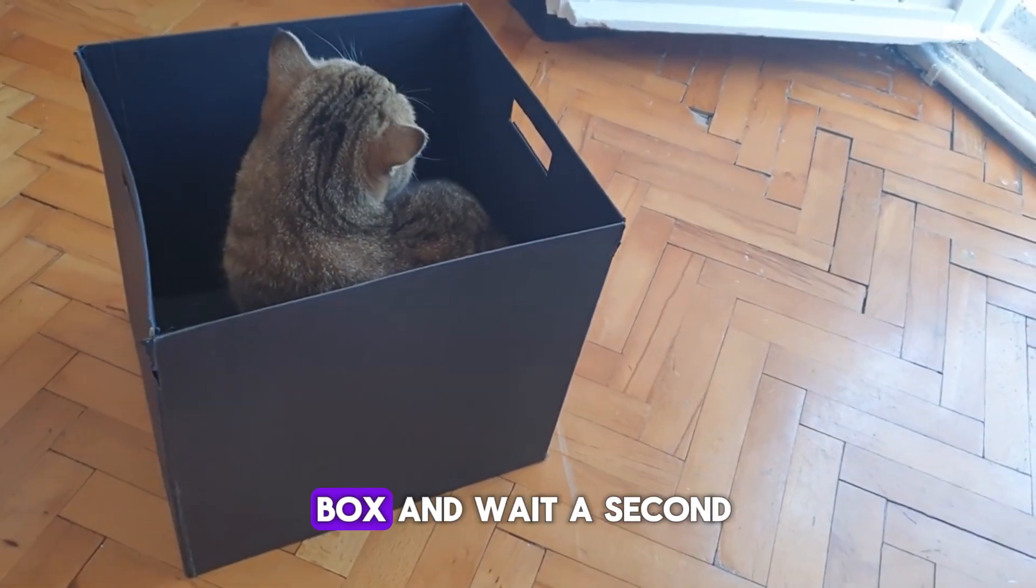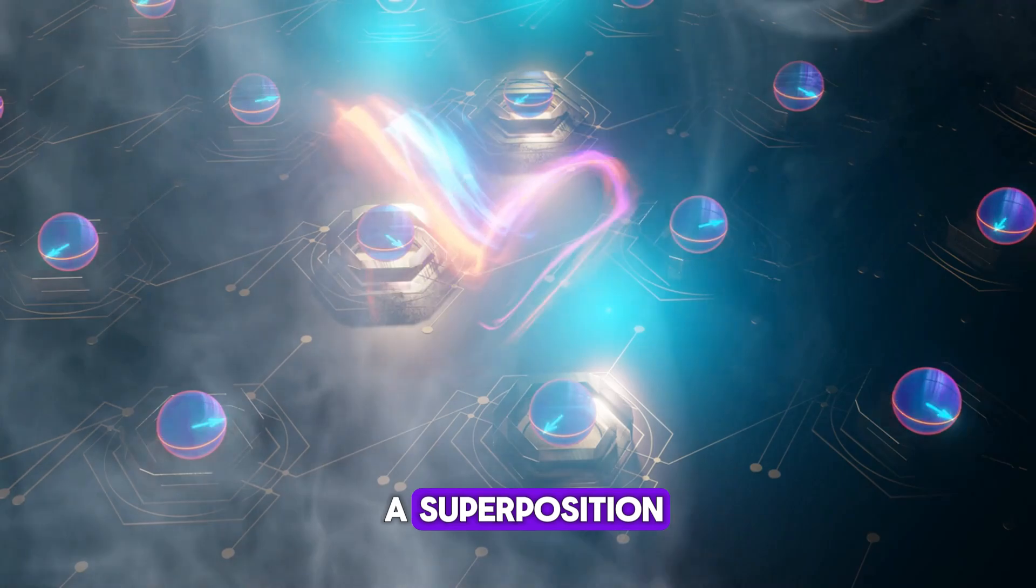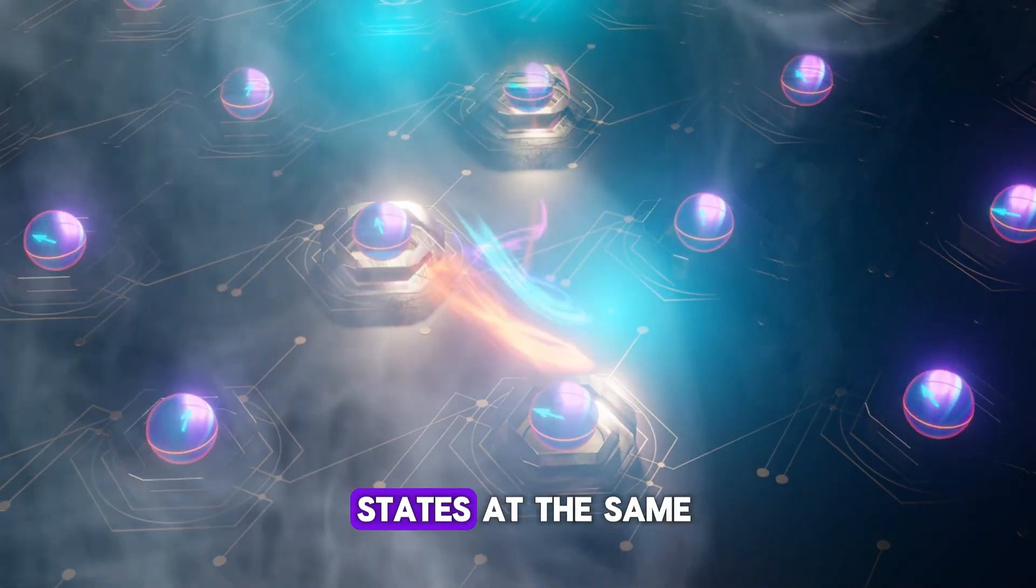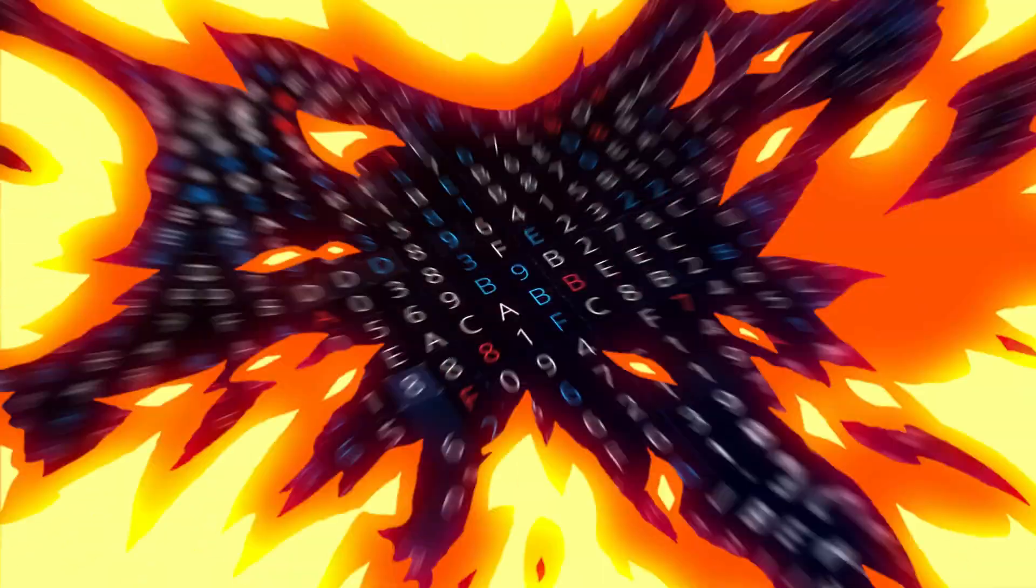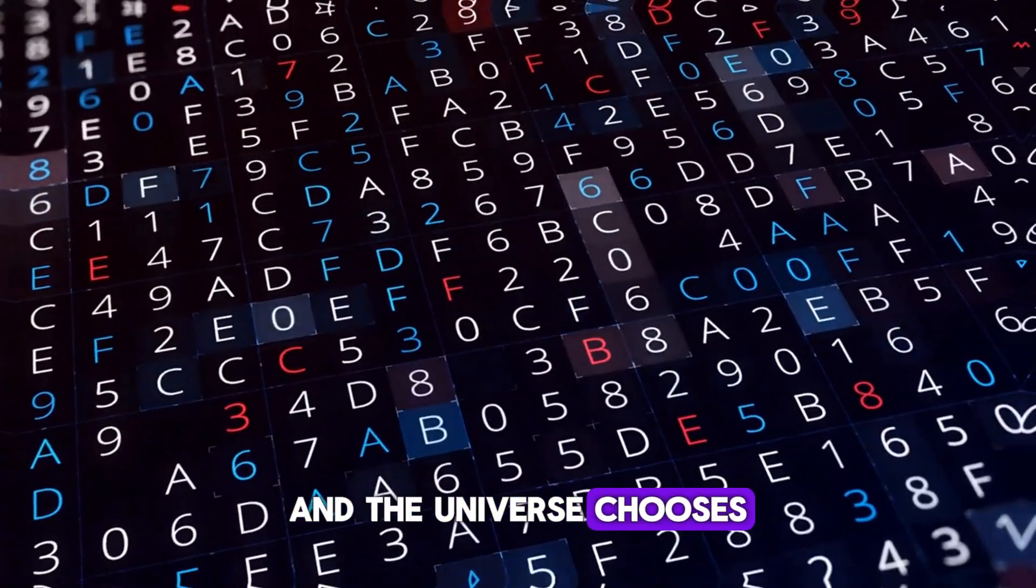If you close the box and wait a second, you would expect the cat to be either alive or dead. However, in quantum mechanics, things can exist in a superposition, that is in both states at the same time, until observed. If observed, the superposition breaks and the universe chooses a random outcome.